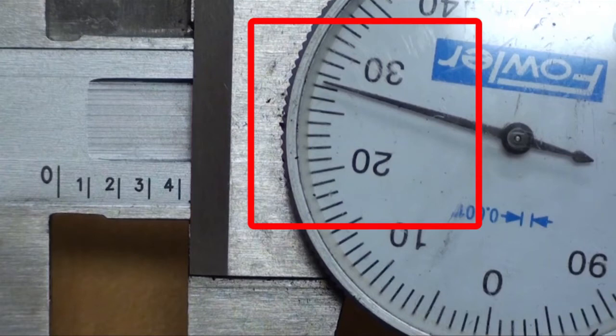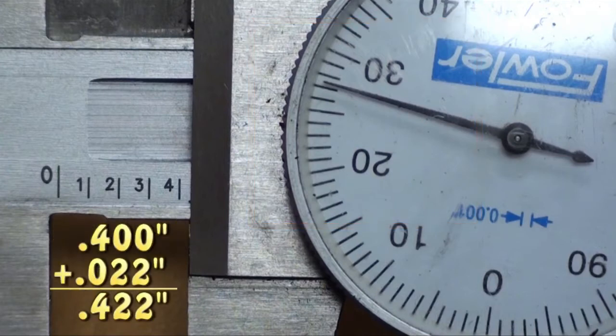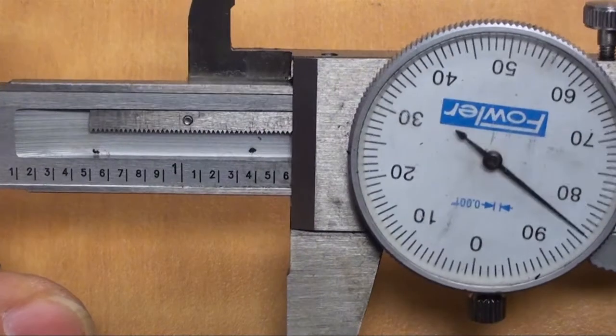The exact distance is shown on the dial. The dial reads 22 thousandths of an inch. Therefore, this measured value is 400 thousandths of an inch plus 22 thousandths of an inch, or 0.422 inches.